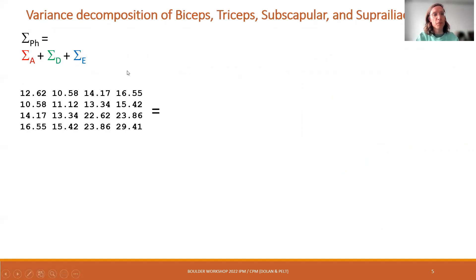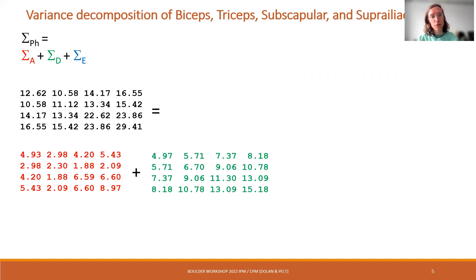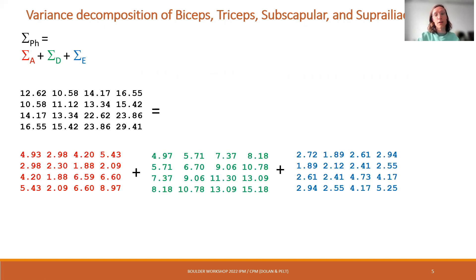In the multivariate ADE model, we simply estimate the A, D, and E covariance matrices, which are all 4×4 matrices. Using the twin model — and again Connor also said this — the twin model is really a means to an end, namely to be able to decompose the variance in traits or the covariance into different variance components.